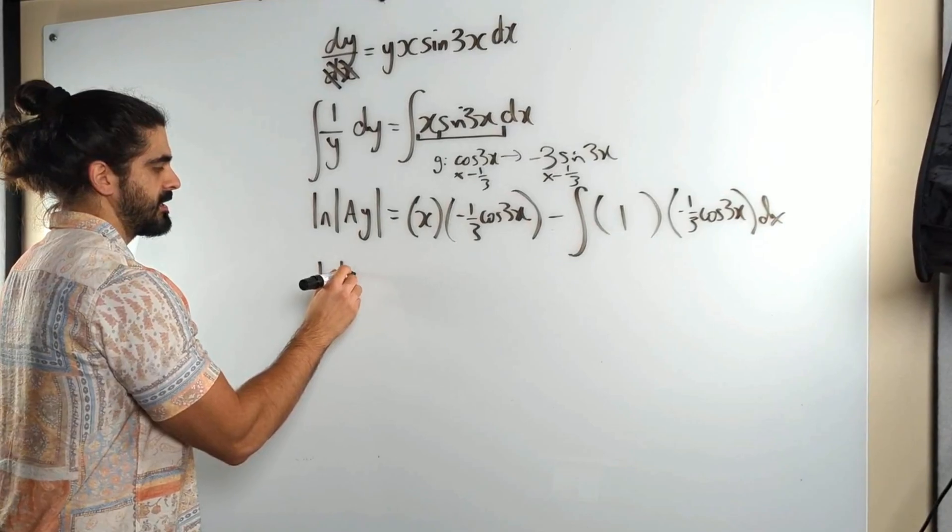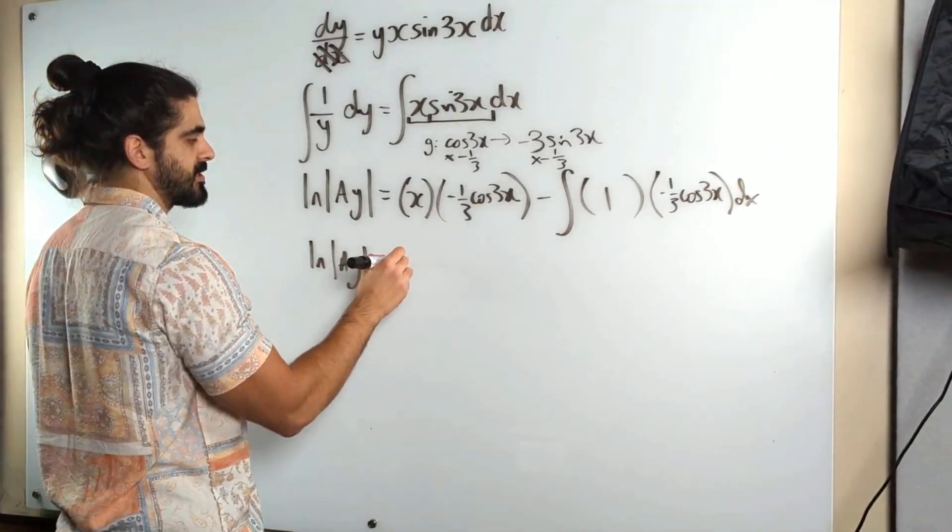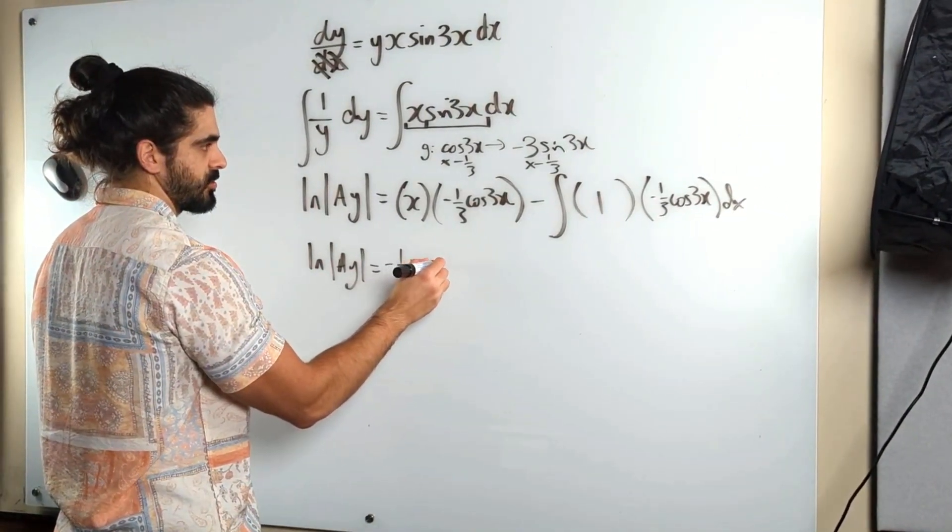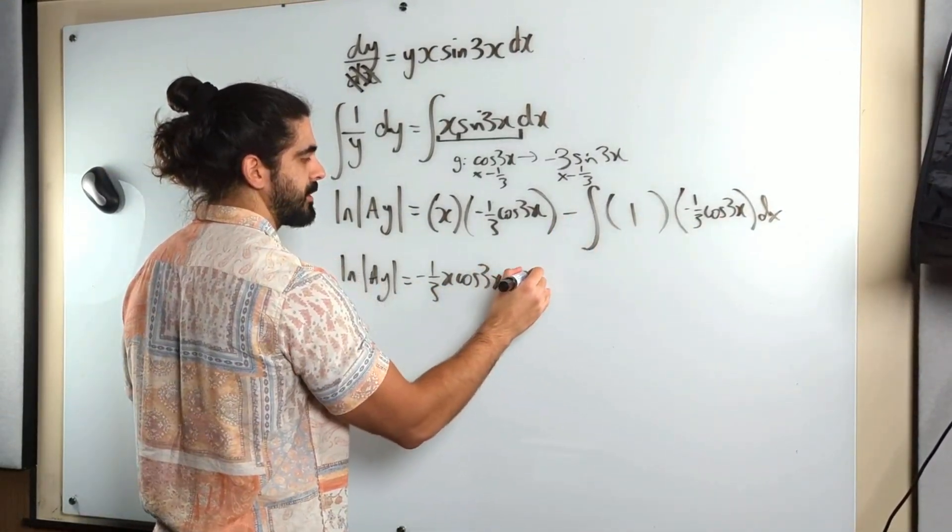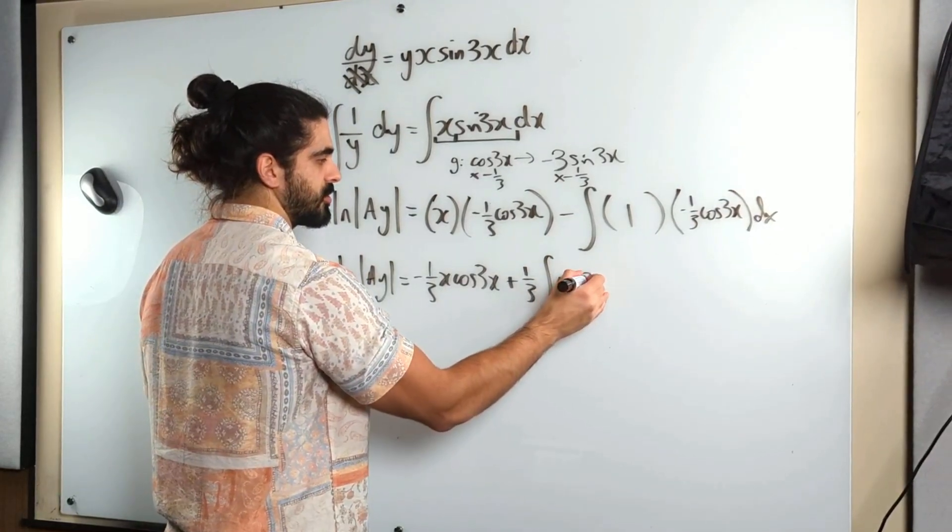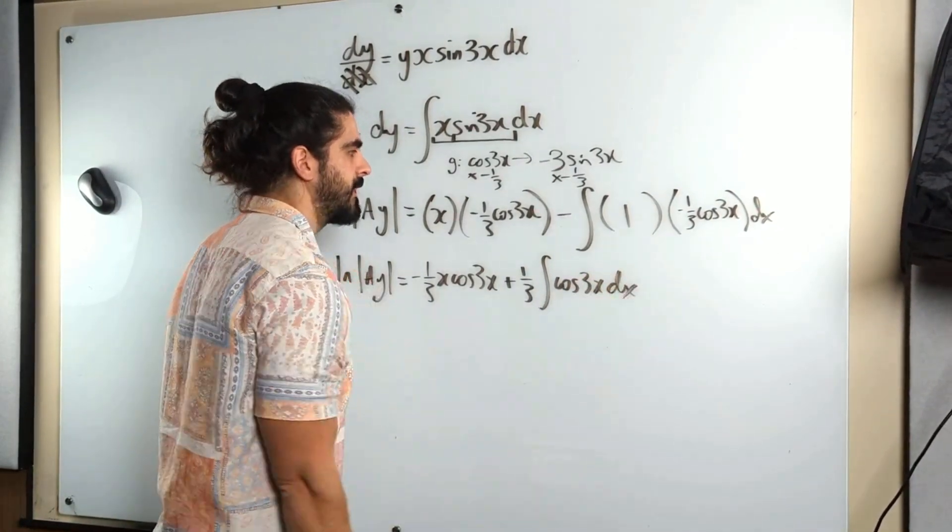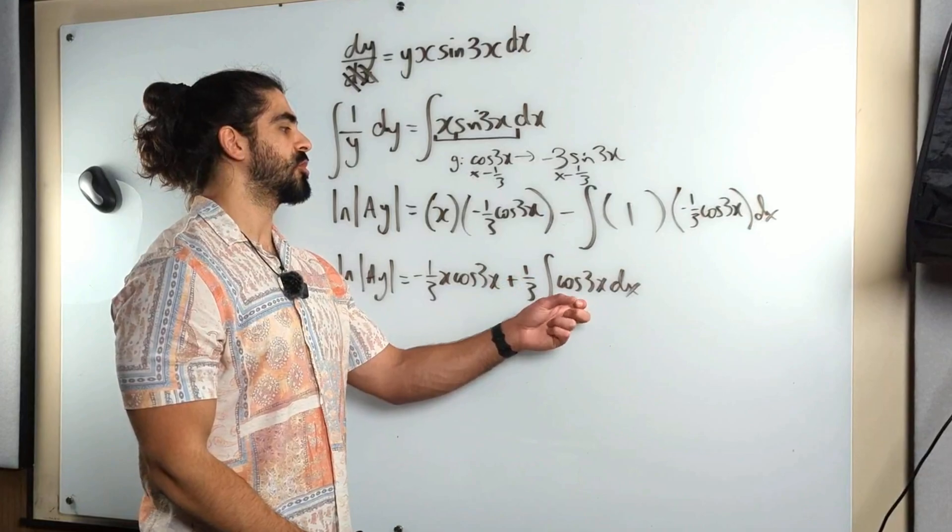So at the moment we have ln ay is minus a third x cos 3x. Now that minus a third can come out to become plus a third integral cos 3x dx. Now, same as above cos 3x.